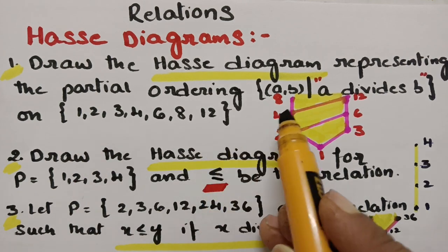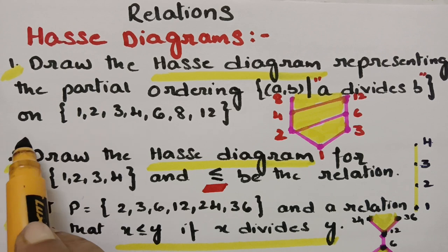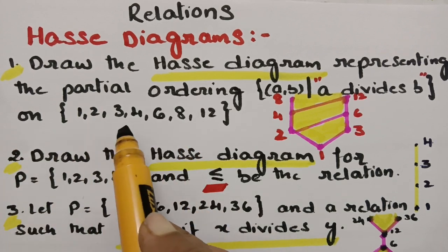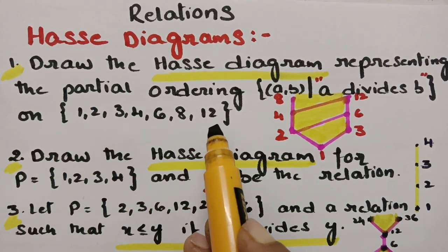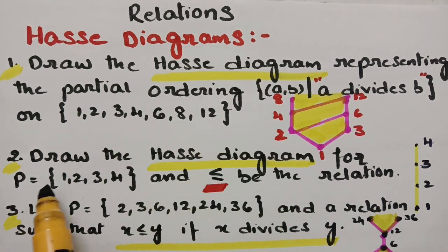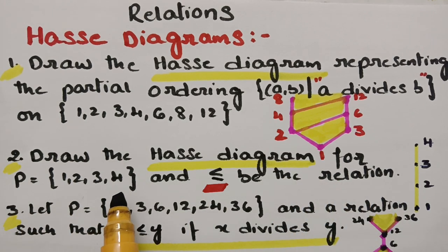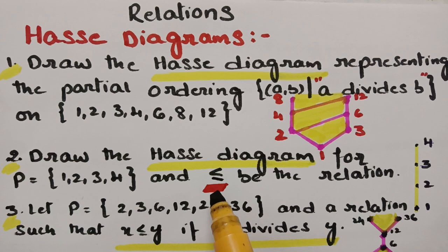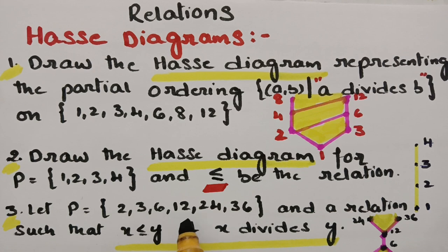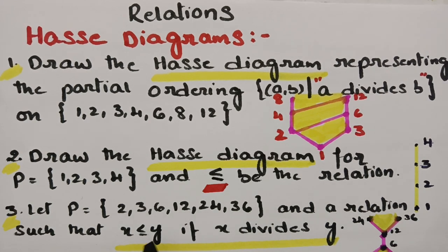The first problem: draw the Hasse Diagram for the partially ordered set where the relation is (A, B) such that A divides B, where the set is {1, 2, 3, 4, 6, 8, 12}. The second problem is to draw the Hasse Diagram for P = {1, 2, 3, 4} with less than or equal to as the relation. The third problem: P is given as {2, 3, 6, 12, 24, 36} with the relation x ≤ y if x divides y.